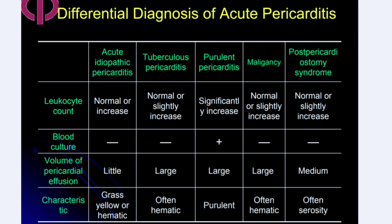Leukocyte count may be normal or elevated in acute idiopathic pericarditis, significantly increased in purulent pericarditis, and variably increased in TB and malignancy. Blood culture is significantly positive in purulent pericarditis. Pericardial fluid volume is massive in purulent pericarditis and malignancy. Fluid characteristics: purulent and cloudy in bacterial pericarditis; yellow or hematic in idiopathic; blood-tinged in TB; and serous in post-pericardiostomy syndrome.